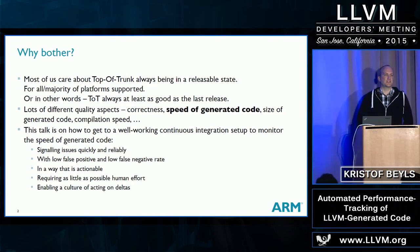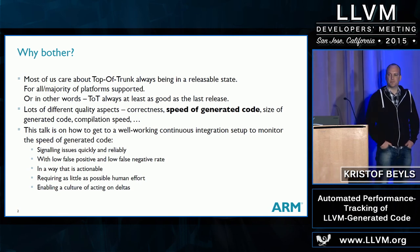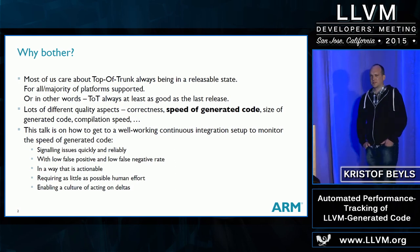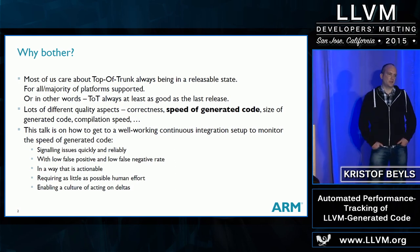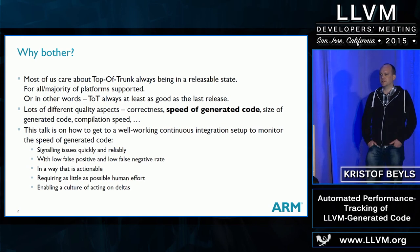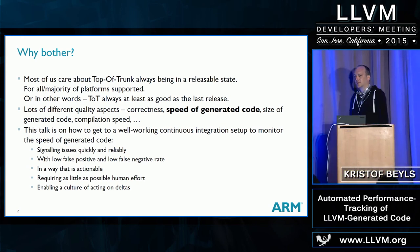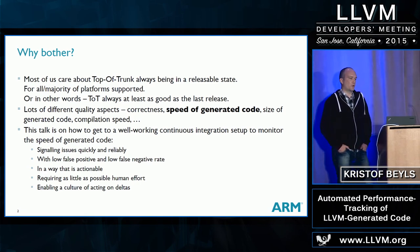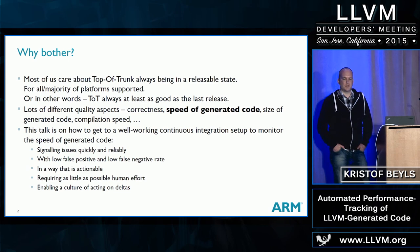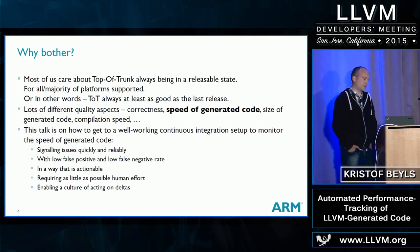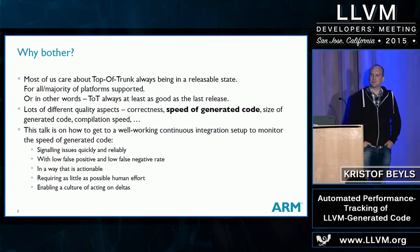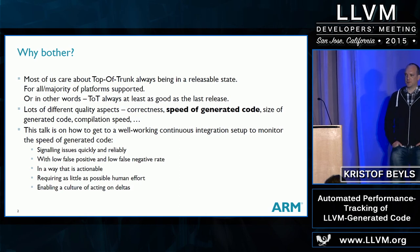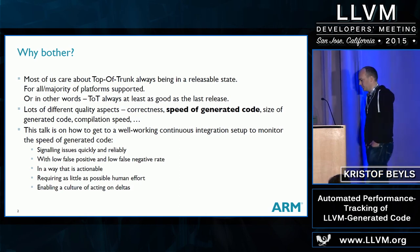There are many different quality aspects that could be measured, like correctness, speed, or compile time. For correctness, we've got a pretty good working system. There are lots of both public and private bots, and they make sure that correctness on Top of Trunk really is reliable. There's always going to be a commit that regresses something, but it gets caught pretty quickly. Overall, correctness on Top of Trunk is good.